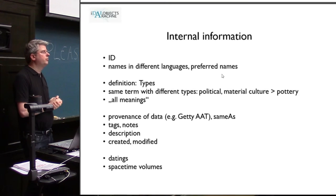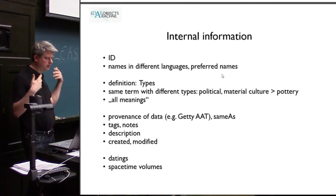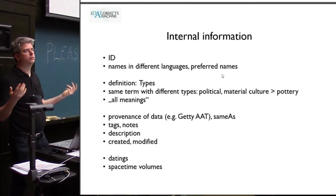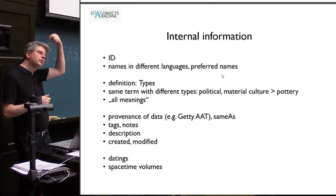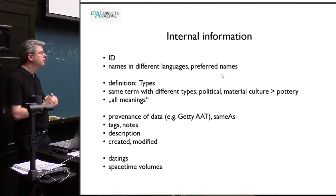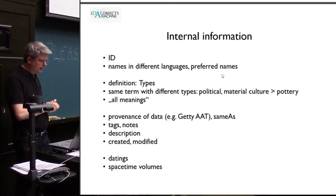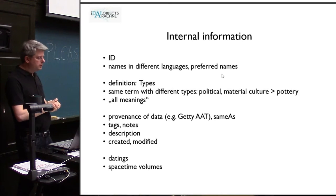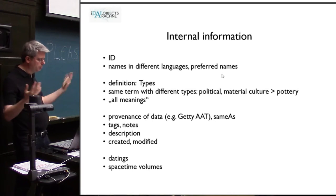We can have the same type term like 'Augustan' in a political sense, or in a material culture sense — the curly decorations might go in one direction or the other. If people don't provide the type information, we also have something that covers all meanings.